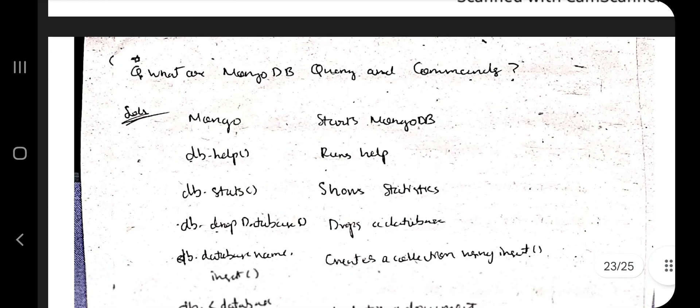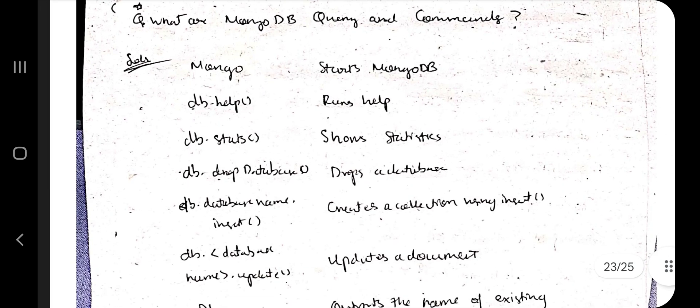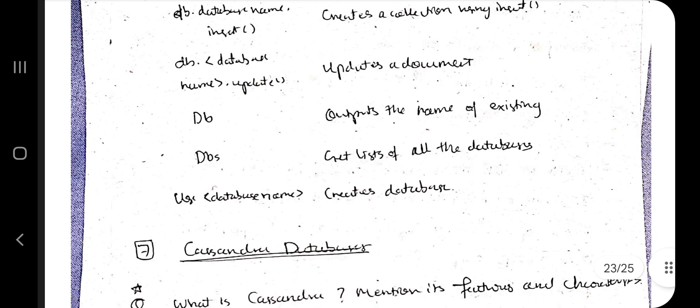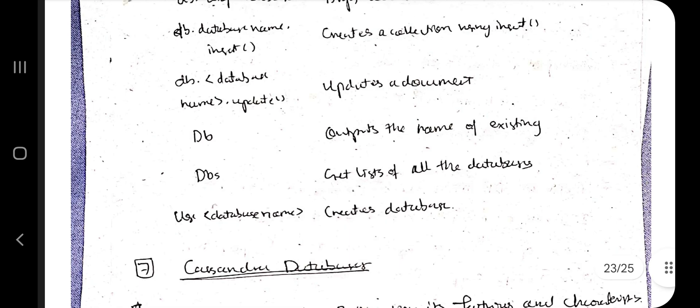Moving on to the second question of MongoDB: what are the MongoDB query and commands? All you have to remember is DB. Mongo starts MongoDB. db.help runs help, db.stats shows statistics, db.dropDatabase drops database, insert, update, and just DB outputs the name of existing databases. Use database name creates a database, pretty simple.